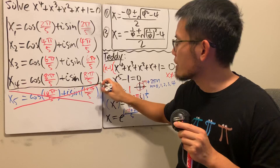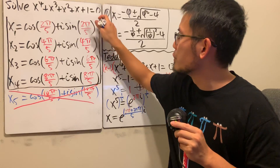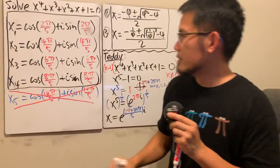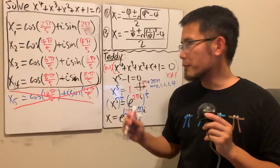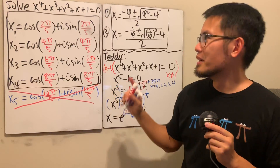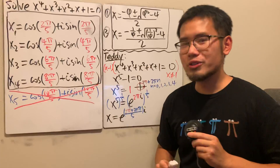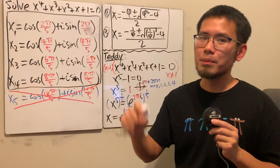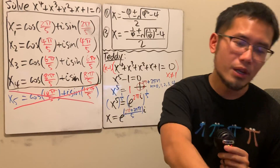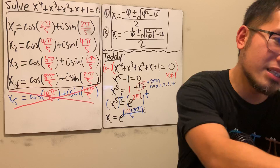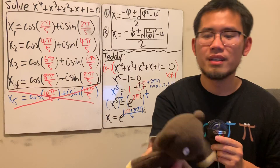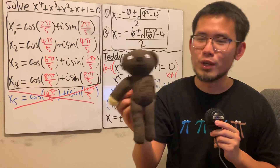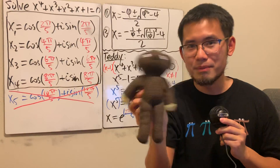So the second method gives us all four roots in cosine-sine form. This is a pretty classic quartic equation — very cool stuff. If you have any questions or comments, leave them below. Thanks to Teddy, and thanks for watching!